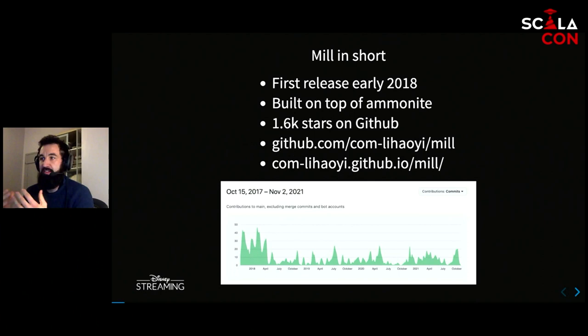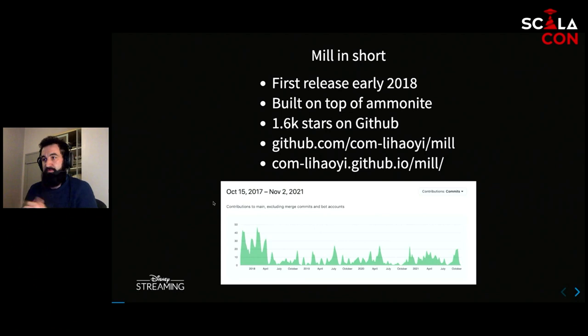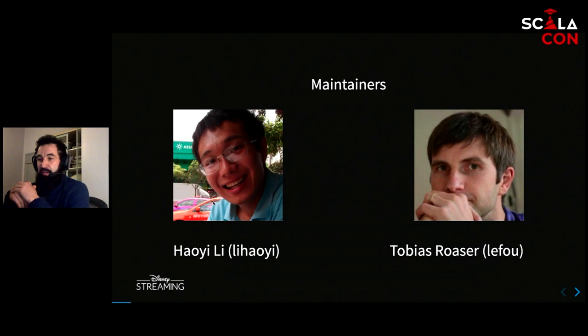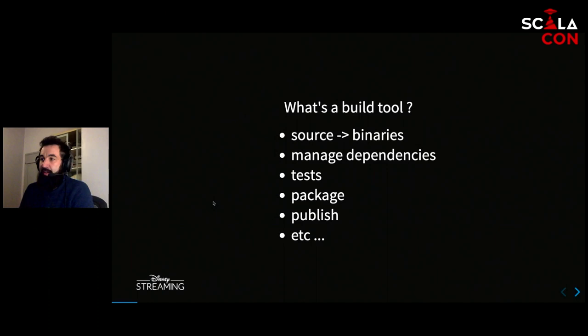Mill in short is a project that was first released in early 2018, after Howie Lee had written a blog post around some of the problems that SBT has that prevent its users from building a mental model of how it works. Mill is built on top of Ammonite. It is a competitor to SBT, with about 1.6K stars on GitHub. It is maintained by Howie Lee and Tobias Roser — mostly these days it's Tobias who does the maintenance work.